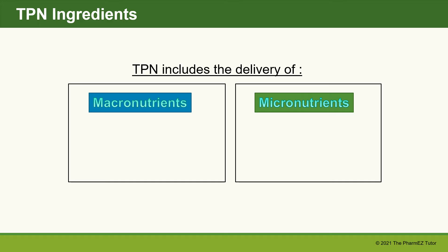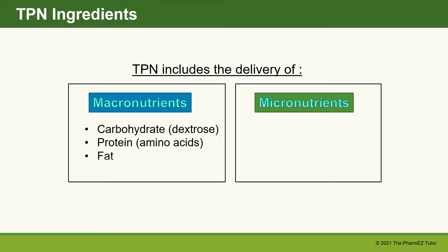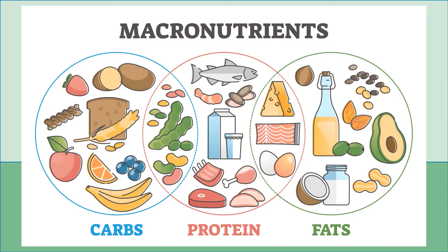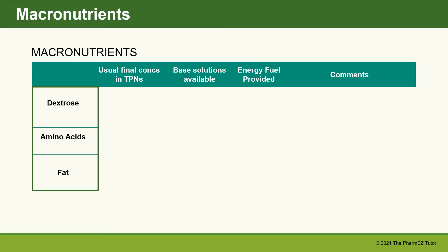TPN includes the delivery of macronutrients and micronutrients. Macronutrients are composed of carbohydrates as dextrose, protein as amino acids, and fat. Micronutrients are composed of electrolytes, vitamins and minerals, trace elements, and water. The TPN macronutrients provide nutrients very similar to the food we eat every day. The key macronutrient components are dextrose, amino acids, and fat. Let's delve into each one more closely.